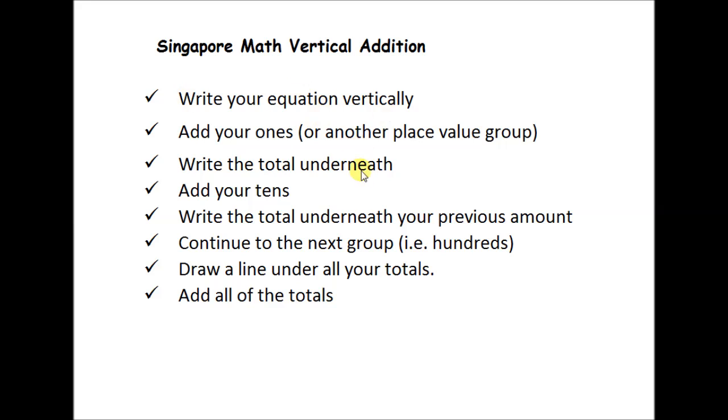Also then add your ones or, because of the commutative property in addition, you can add any other place value group. You write the total underneath, then you add your tens, then you write the total underneath your previous amount, like we did in the example I showed you.